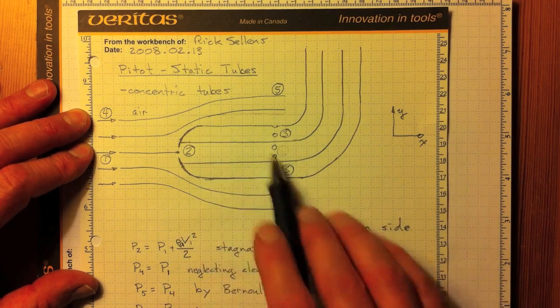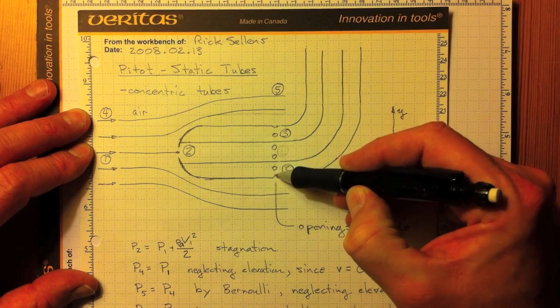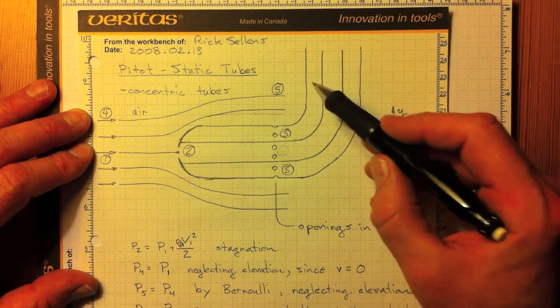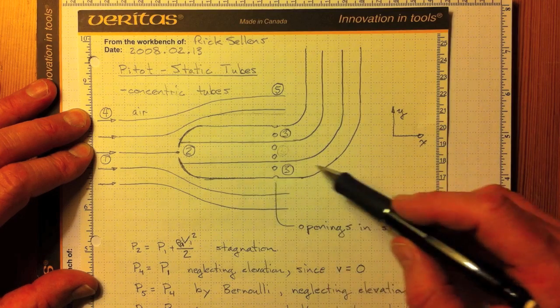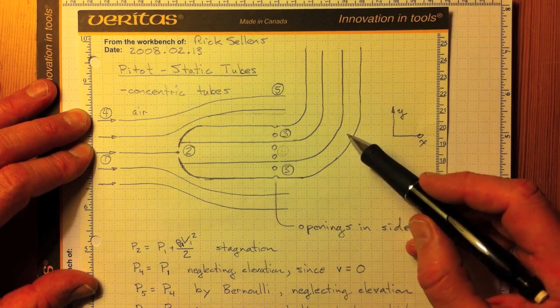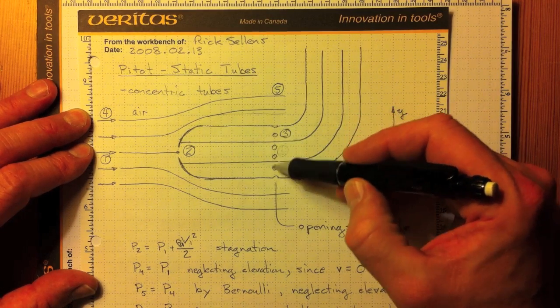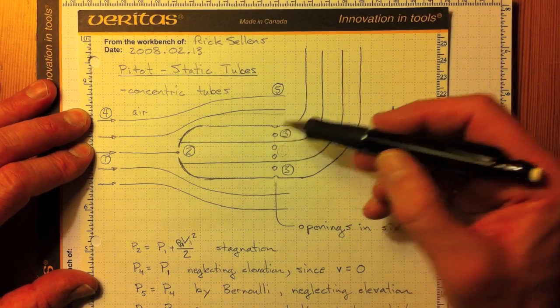Likewise, if we put a concentric tube around it, then we can put holes in the side of the tube here at location 3, so that the pressure in this outer concentric section of the tube will be ambient pressure, or at least the pressure right outside these ports at 3.